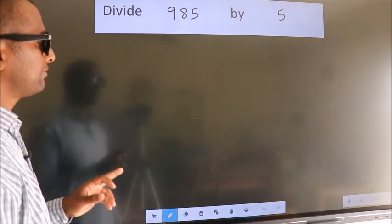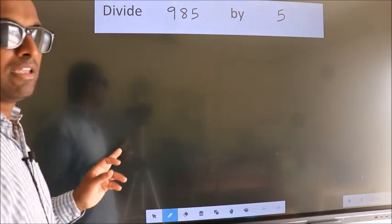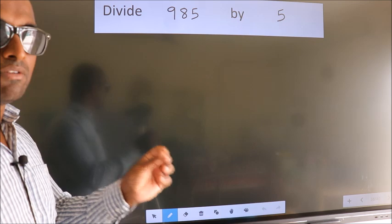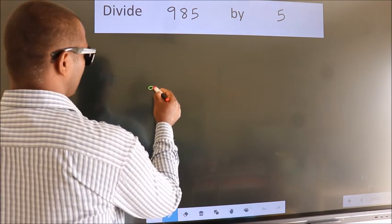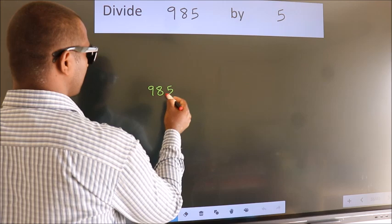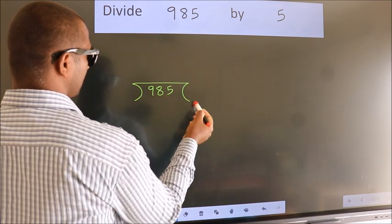Divide 985 by 5. To do this division, we should frame it in this way. 985 here, 5 here.